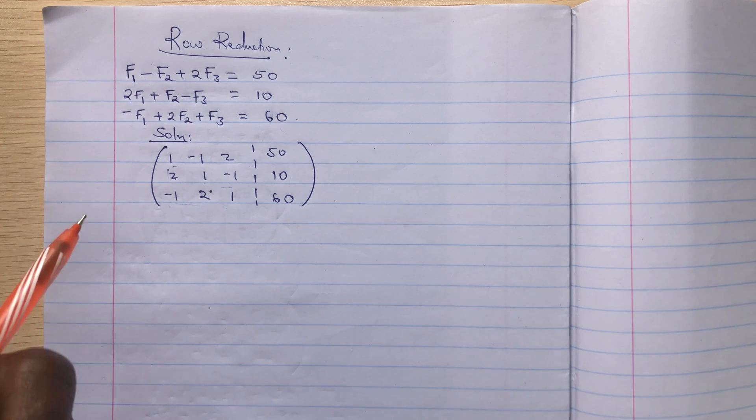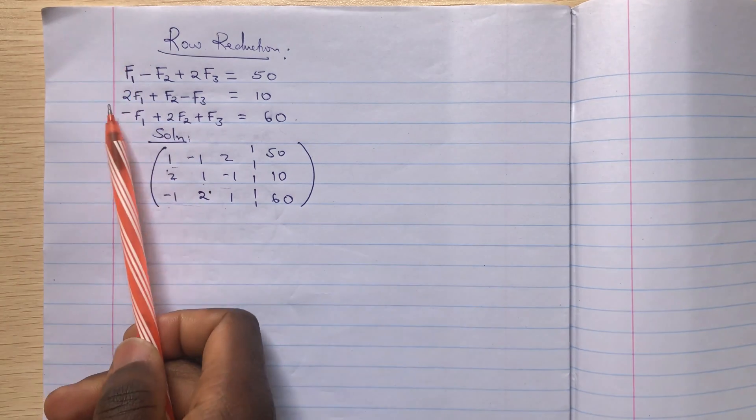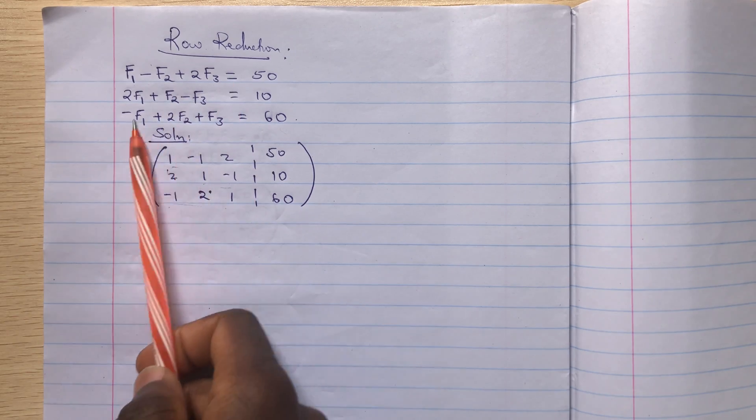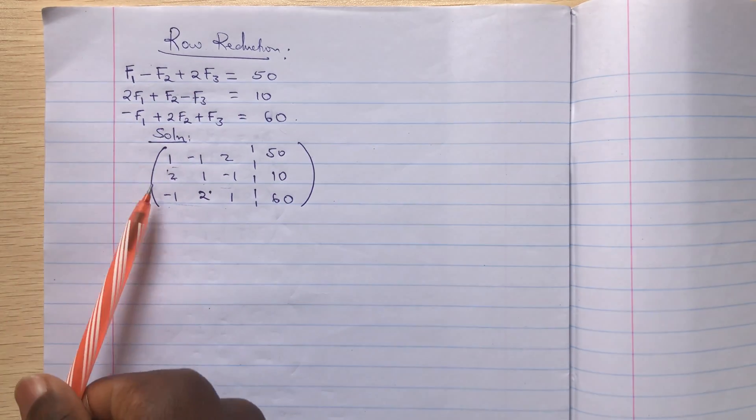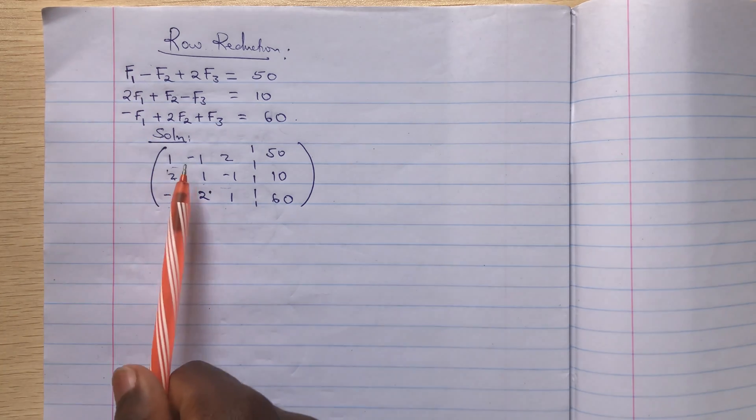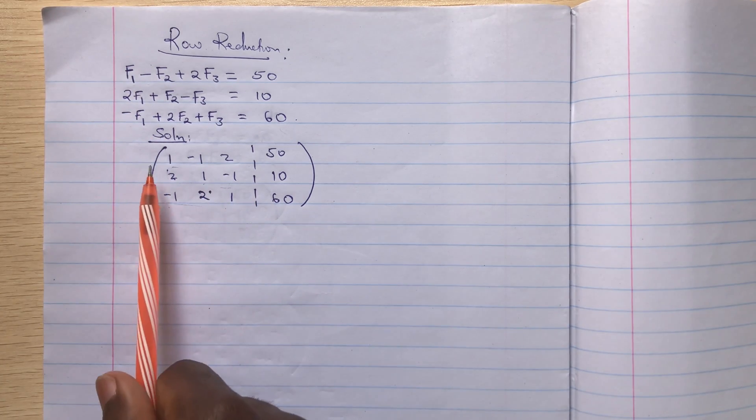So as you can see we have our question here: F1 minus F2 and all this. So let's dive into our solution. We first write all these unknowns in matrix form as we can see I've already done that.